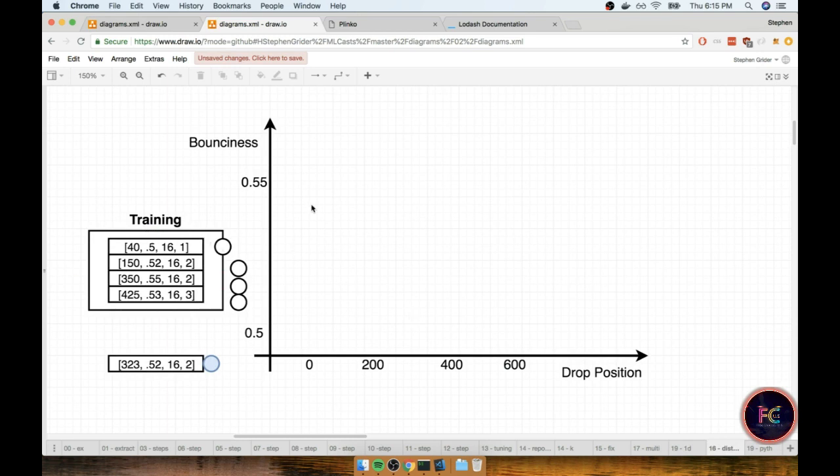So let's do that same exercise, now taking our drop position and our bounciness into account. So again we'll say for 40 and a bounciness of 0.5, maybe that line would be, or that data point would be like right there or so. Then 150 and 0.52, excuse me, that'd be maybe right about there or so.